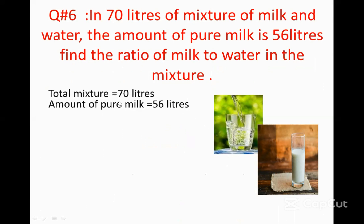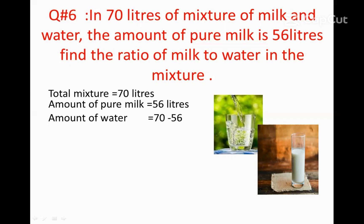Total mixture is equal to 70 liters, as given in the question. Amount of pure milk is equal to 56 liters, as given in the question. Now, to find the amount of water, we will subtract 56 — the amount of pure milk — from 70 liters. 70 minus 56 is equal to 14 liters.